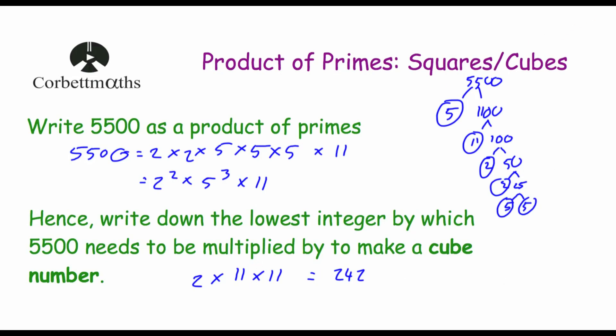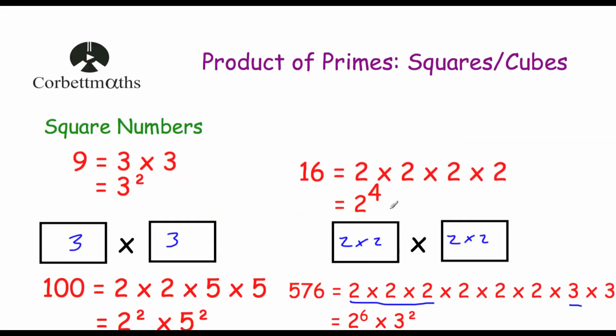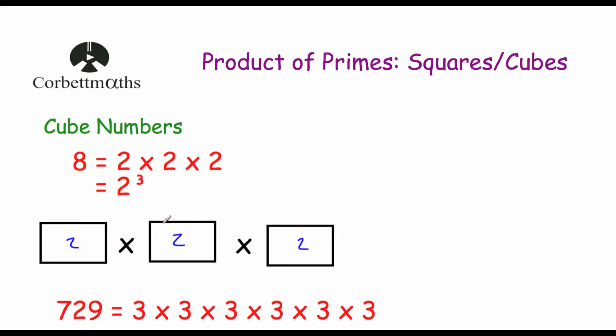So it's really useful to know that a square number, whenever you write it as a product of primes, will have even powers for all the prime numbers, and a cube number will have multiples of 3 for the powers. That can be really useful in these questions.